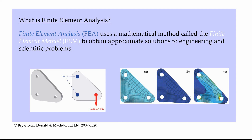If you're here watching this video, it's very likely you've seen pictures like the ones shown here on the bottom right, where you see an object divided up into lots of squares or triangles with coloured contours overlaying those shapes. On the left we have an engineering problem: a tin plate with three holes, bolted to a wall on the left-hand side, with a pin through the right-hand side hole and some kind of load placed on that pin.